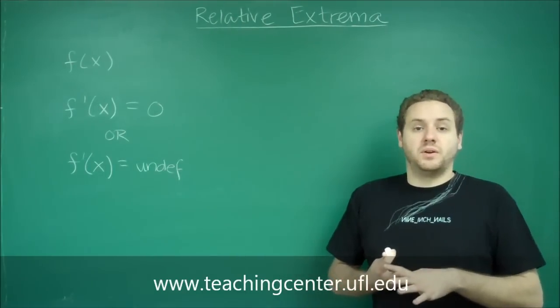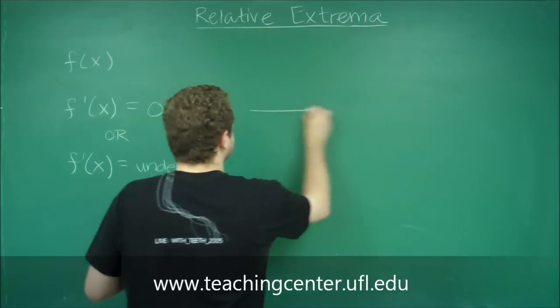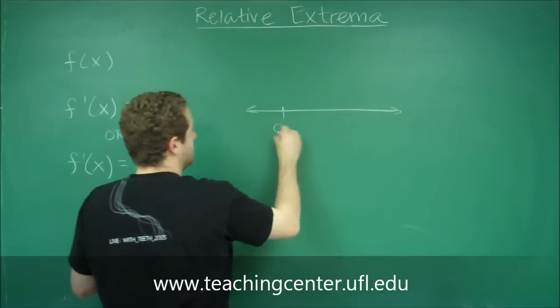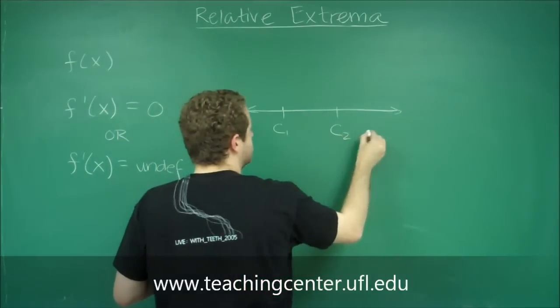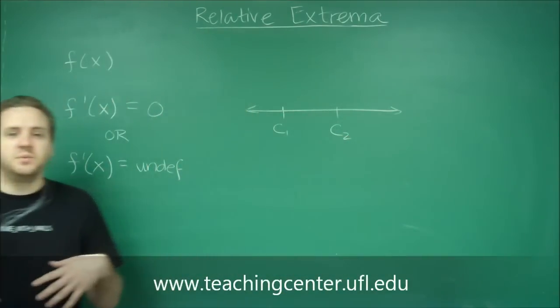So you want to find the critical numbers, you want to put them on a number line. So let's just call our critical numbers c1, c2, etc., however many you might have.